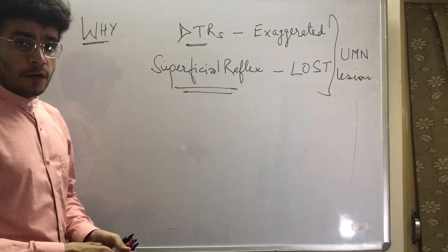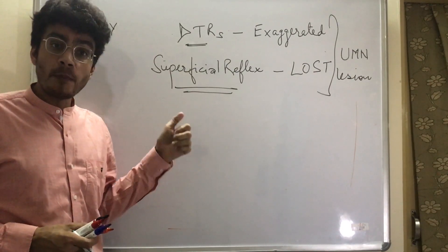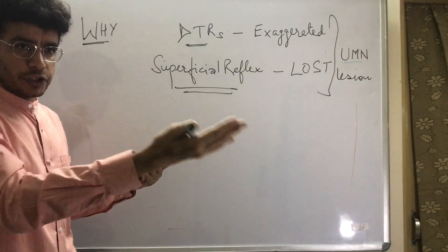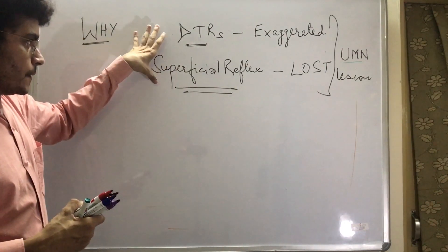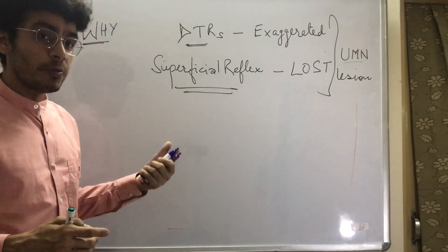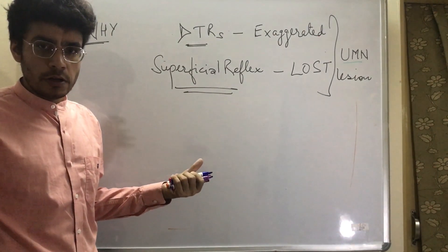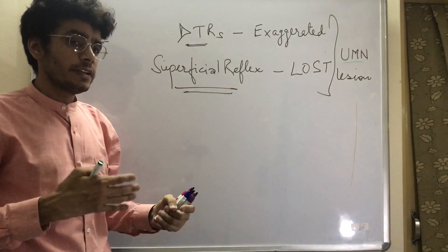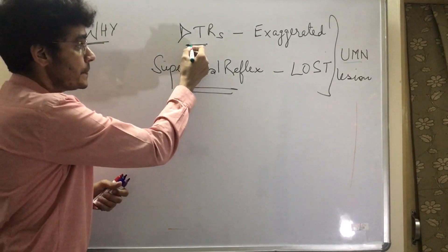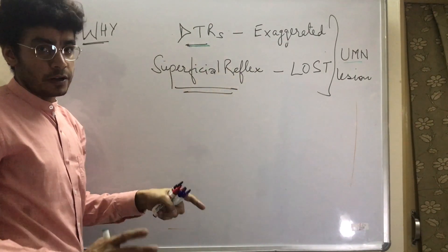In the last class we finished off the motor system and discussed differences between upper motor neuron lesion and lower motor neuron lesion. One point is quite peculiar: in lower motor neuron lesion, reflexes are lost because the lower order neuron is cut. But in upper motor neuron lesion, we say reflexes are exaggerated — that's not the complete truth. Deep tendon reflexes are exaggerated, but superficial reflexes are lost.